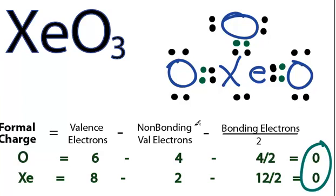Because these formal charges are 0, that tells me that this right here is going to be the best Lewis structure for XeO3. Even though the other ones seem to satisfy the octets, the formal charges really didn't work out. They should be close to 0 or 0. That's going to be the best Lewis structure for XeO3. This is Dr. B, and thanks for watching.